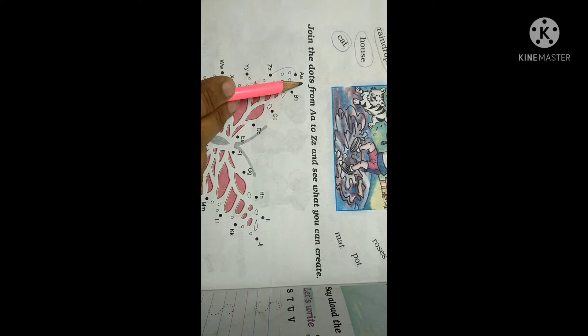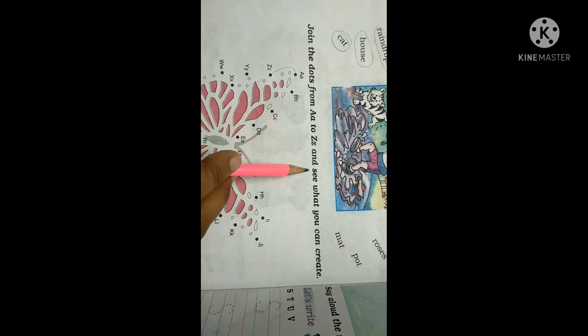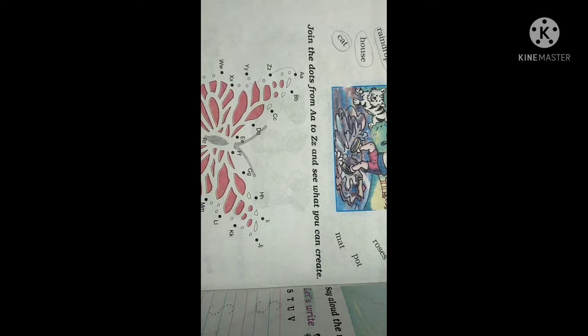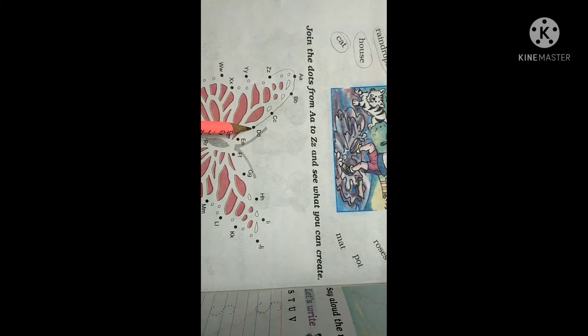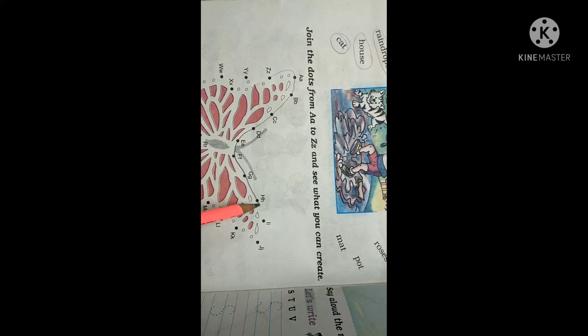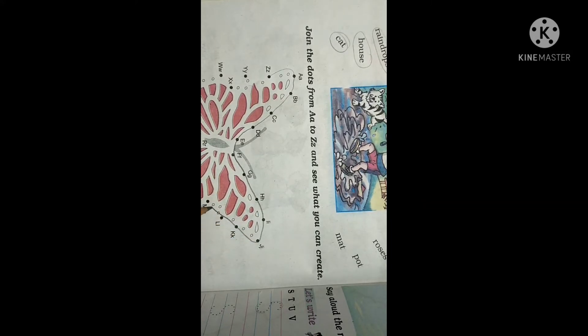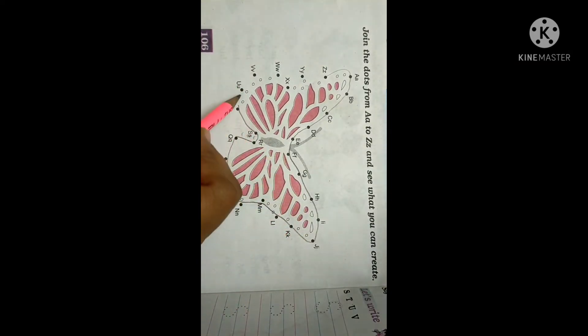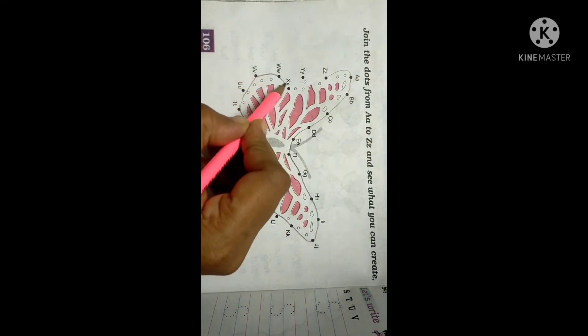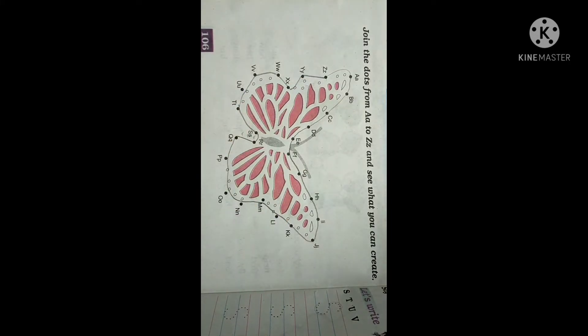Now join the dots from A to Z. Both ABCD is given, capital and small, and see what you can create. Now you have to join the ABCD and you have to find what the picture it is. So let's start. So which picture we have got? We have got the butterfly. Beautiful butterfly.